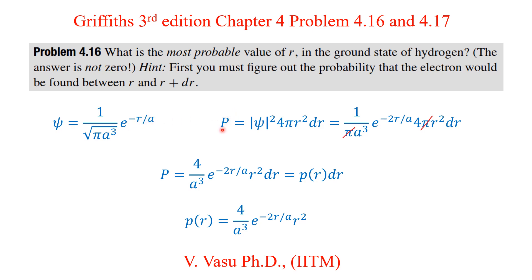The probability of finding the particle between R and R plus dr equals modulus of psi squared times 4 pi r squared dr. Here 4 pi r squared is the surface area element. We can cancel the pi from the wave function normalization with this pi, so we get 4 divided by a cubed, then the exponential term e to the minus 2r over a, multiplied by r squared dr. This equals P(r) dr — the probability of finding the particle at r.